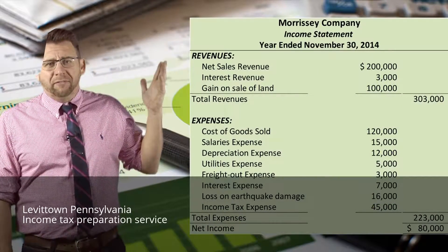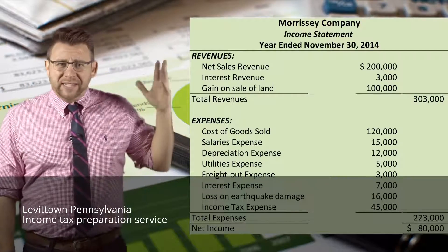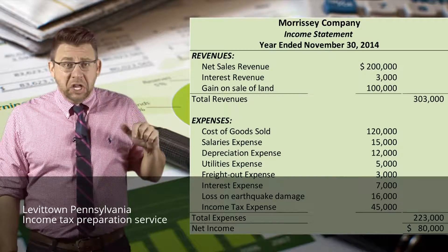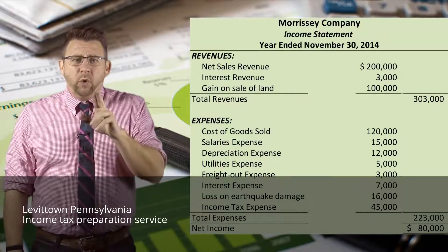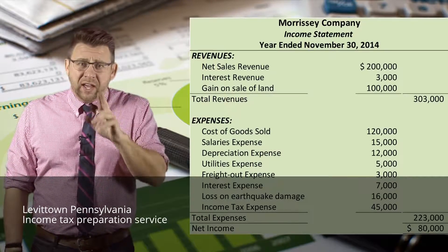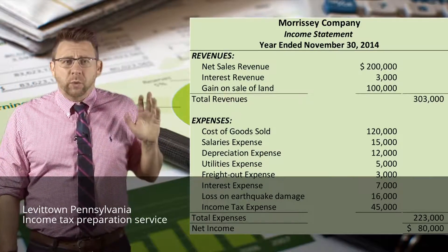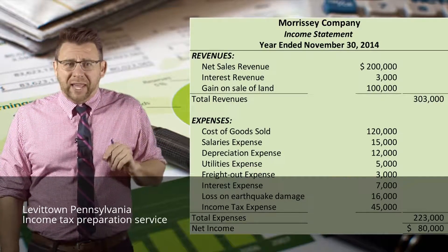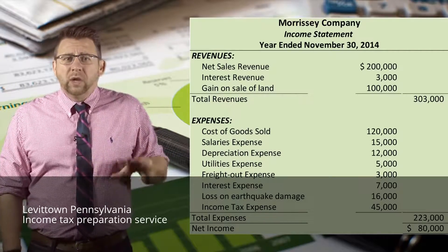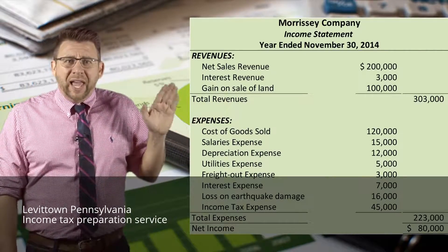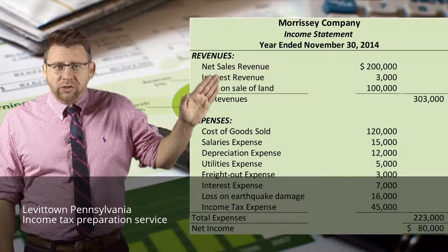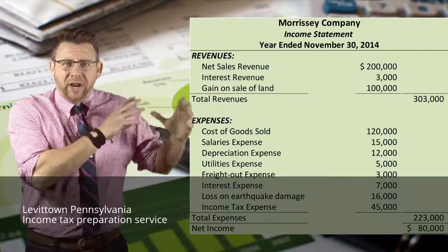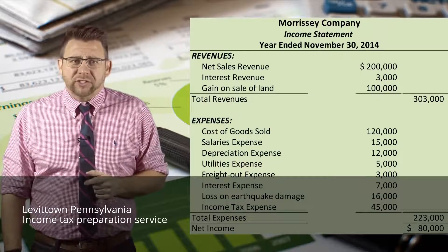Here is an example of a single-step income statement. You can see that revenues and gains, which we will learn about later, are all listed together — same with expenses. One area some students struggle with: when reporting financial statements, if we have a list of common accounts like revenues and expenses, we list them all in one column and carry the total out to the far column. The columns don't mean debit and credit when presenting financial statements.